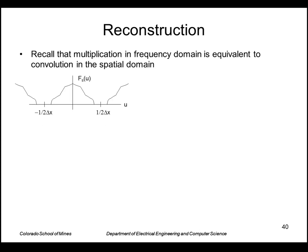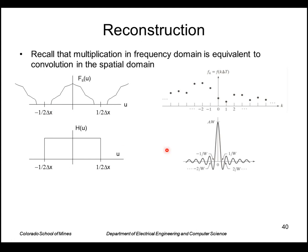So recall that this is what we had for our sampled function. It had a transform that looked like this. And the equivalent to that was the set of samples in the spatial domain. Then we multiplied by the ideal low pass filter, which its transform looks like that. And recall its Fourier pair is a sinc function in the spatial domain, which looks like that.